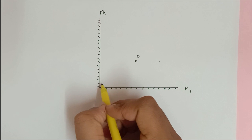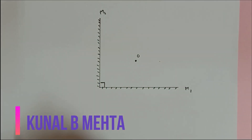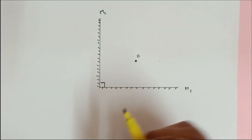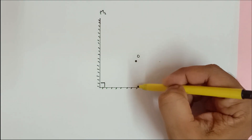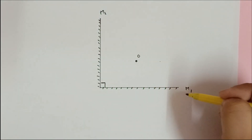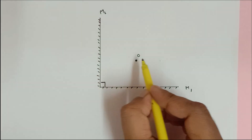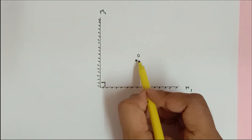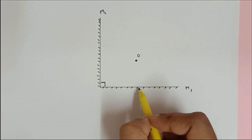Here we have mirrors M1 and M2 which are at an angle of 90 degrees with respect to each other. This is the small point-sized object O, which is at a distance of 3 centimeters from mirror M1 and 4 centimeters from mirror M2. The distance is always measured by dropping a perpendicular line from the object to the mirrors.